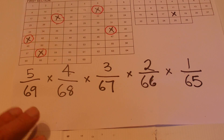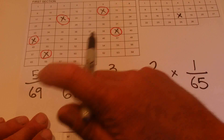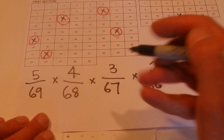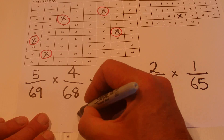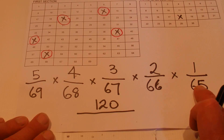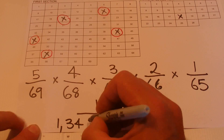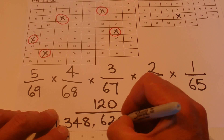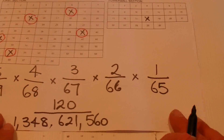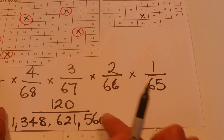That's the maths to work out the first section odds. You can see there are multiplication signs as we go through: 5 × 4 × 3 × 2 × 1 gives a total of 120. Then 69 × 68 × 67 × 66 × 65 gives us the enormous number of 1,348,621,560. We've got 120 chances in that 1.3 billion.